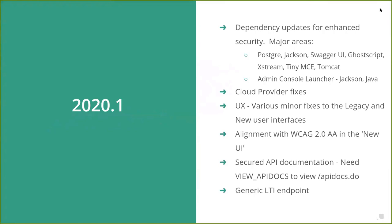For 2020.1, released in March, the primary focus was dependency updates driven by security reviews. The major areas upgraded were: Postgres, if you use that database backend; Jackson for JSON and XML handling; the Swagger UI for API docs; GoScript was confirmed working with the latest version on Linux with OpenAquella 2020.1; and XStream, which is primarily used to marshal Java objects from the database.